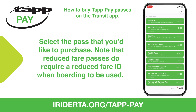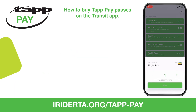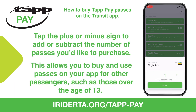Select the pass that you'd like to purchase. Note: reduced fare passes do require a valid reduced fare ID when boarding to be used. Tap the plus or minus sign to add or subtract the number of passes you'd like to purchase. This allows you to buy and use passes on your app for other passengers, such as children over the age of 13.